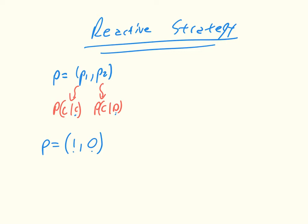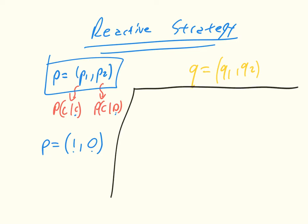What becomes interesting is when we start looking at if we have one reactive player playing against another reactive player, because if we have that, we can actually study this as what's called a Markov chain.